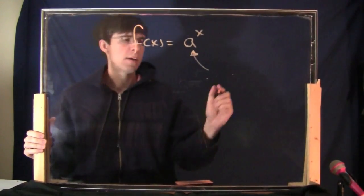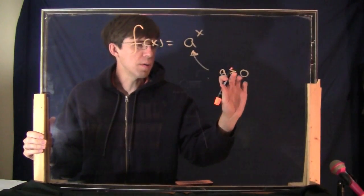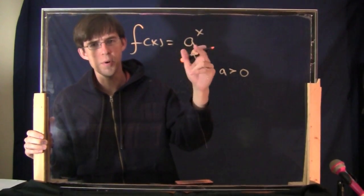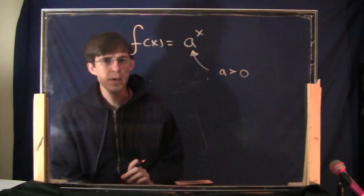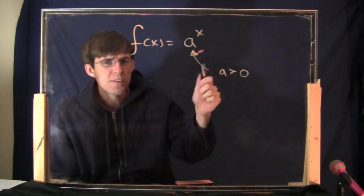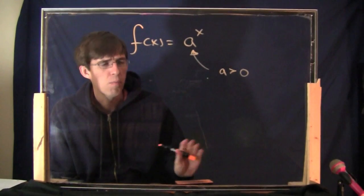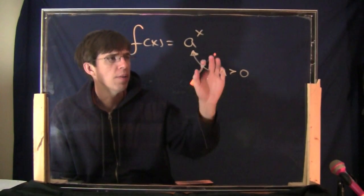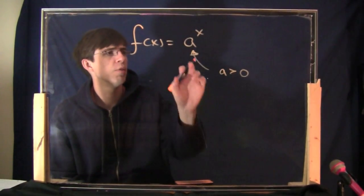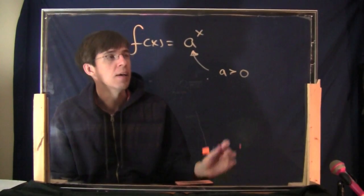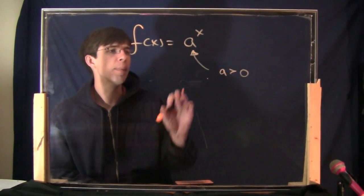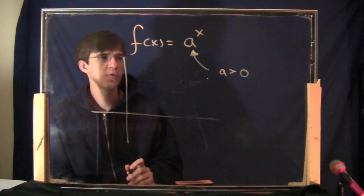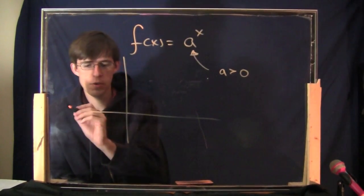This number a, for technical reasons, we're going to assume is always greater than 0. Letting a equal 0 just gives you 0, and if a is a negative number, some weird stuff happens — you can get imaginary numbers. So the a is called the base and the exponent is the exponent. The graph of such a function, y equals a to the x, looks something like this.